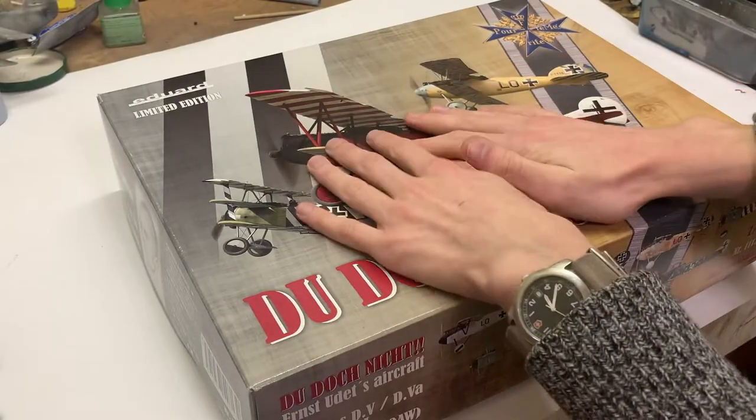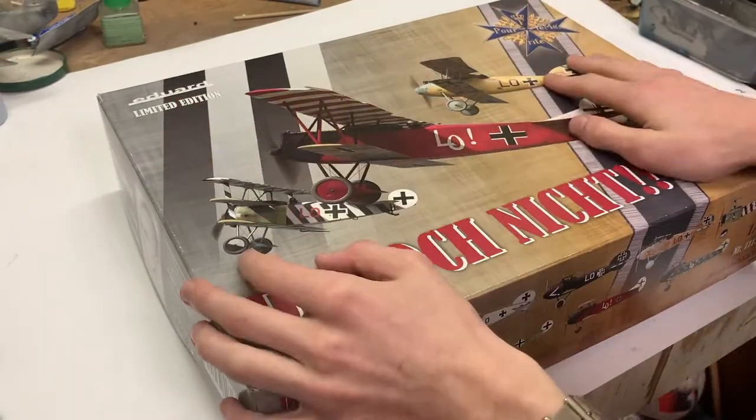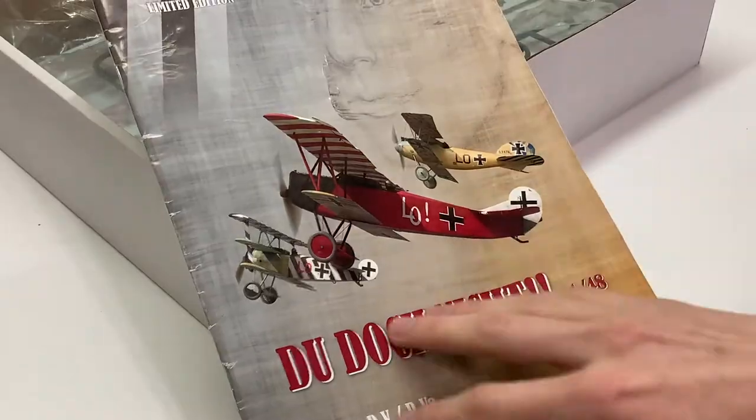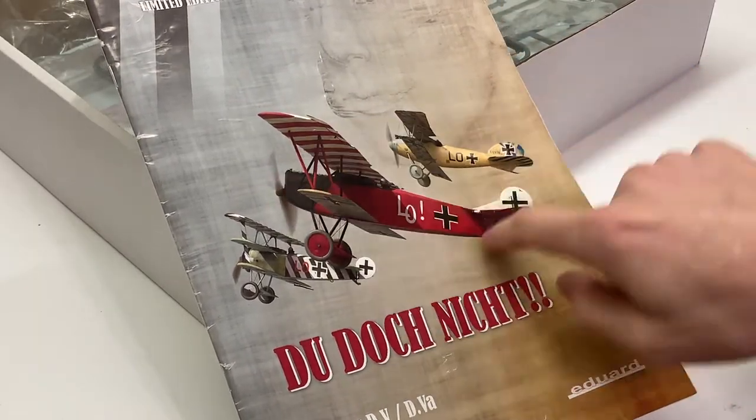Hello everyone and welcome. Today we're going to start building the Eduard Fokker D7 from the Duodoch nicht kit, which includes three planes.